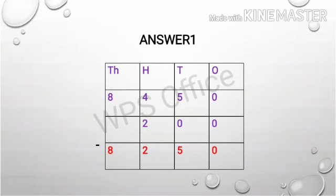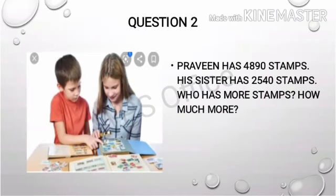When you subtract, you are getting 8,250. Now move on to the second question. Praveen has 4,890 stamps. His sister has 2,540 stamps. Who has more stamps? How much more?